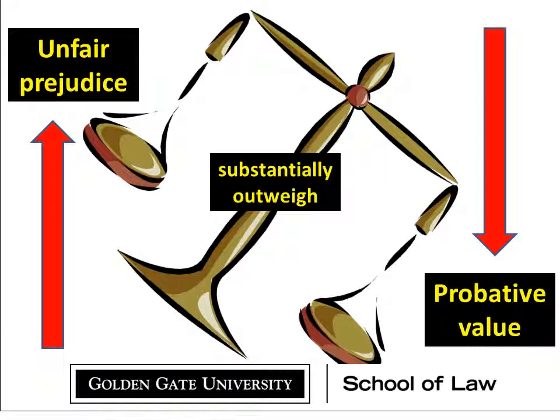Keep these words paired in your arguments: 'unfair' always goes with 'prejudice,' and 'substantially' always goes with 'outweigh' under Rule 403. If you keep those terms wedded together, we will know you're making a proper 403 argument.